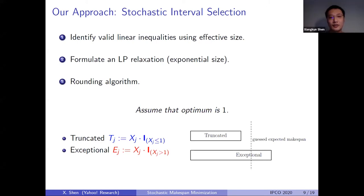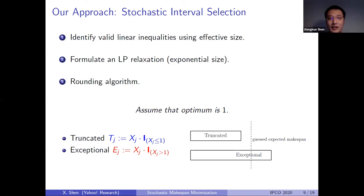We deal with random variables separately into two categories: truncated random variables and exceptional random variables. Truncated random variables have realizations less than the optimal objective value, and exceptional ones have realizations larger than the optimal objective value. We separate these two categories because they behave very differently, especially regarding tail performance. Exceptional random variables are large, so in other words they are easier to handle since we cannot afford to have any of them become large.